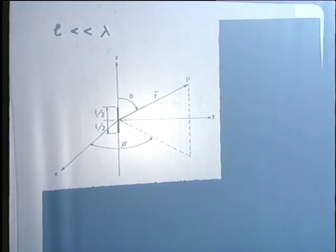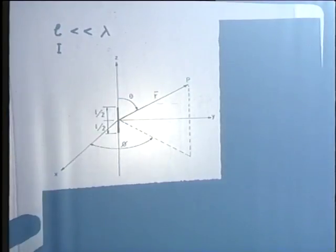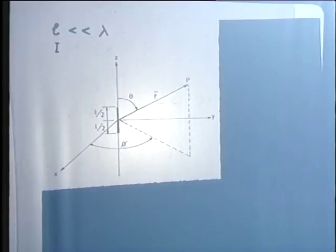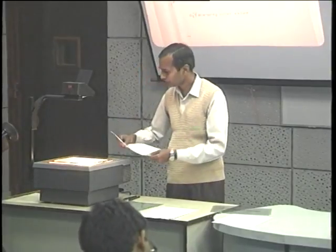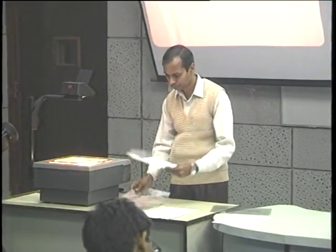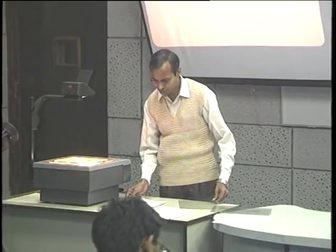We place this Hertzian dipole of length L, carrying a current I, at the origin of the coordinate system. The coordinate system we use is the spherical polar coordinate system, and since we will be dealing with it for the next few lectures, let us spend a little more time on it.